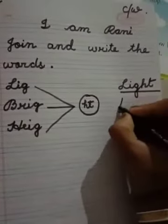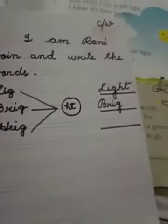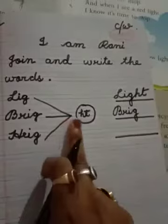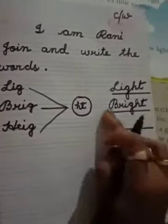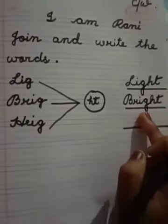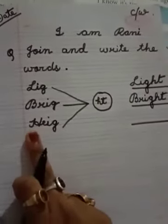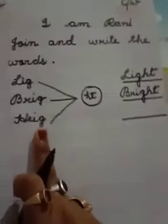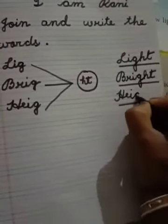So write here B-R-I-G. And then what we will do? We will join with H-T. So write here H-T. Now this is B-R-I-G-H-T. Bright. Next one. H-E-I-G. So write H-E-I-G.